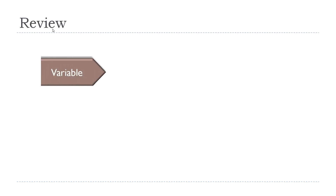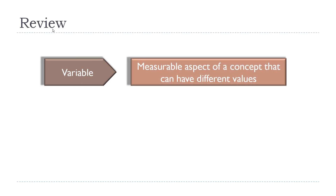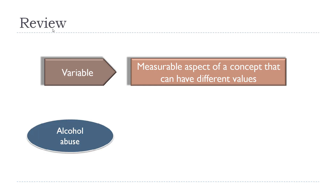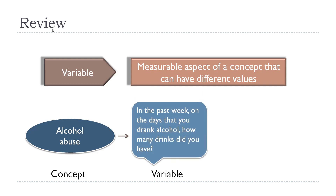Now before we get started let's just quickly review what was in the first video. In that video we learned that a variable is the measurable aspect of a concept that can take on different values. For example, if we have a concept like alcohol abuse, one way we can measure it via a variable is perhaps by asking on a survey: in the past week on the days that you drank alcohol, how many drinks did you have?